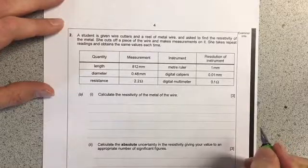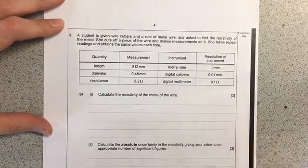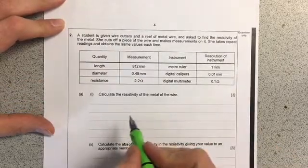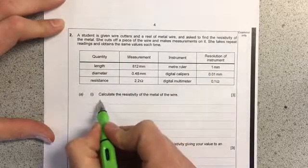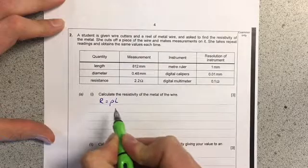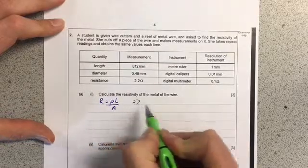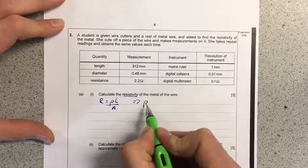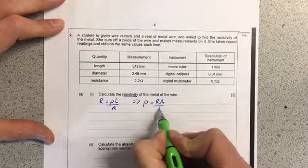This question is all about uncertainty from unit 2 of AS physics. The first thing is relatively straightforward - we need to find the formula R equals ρ (resistivity) times length over area, and rearrange it so resistivity is on its own. So resistivity equals RA over length.